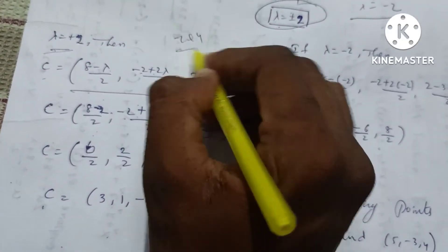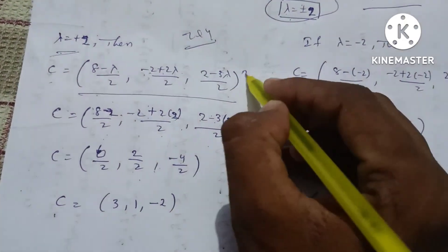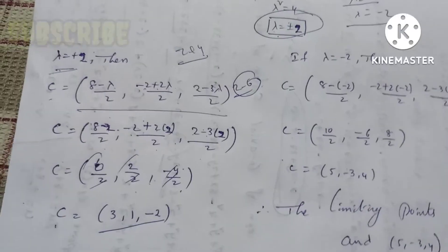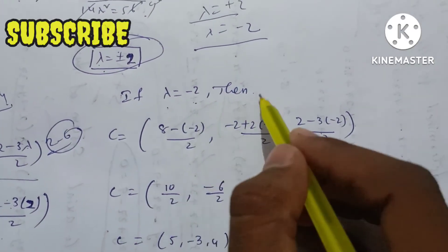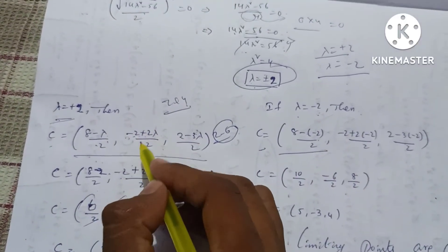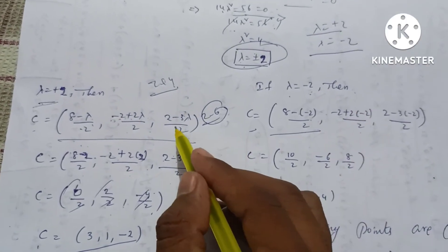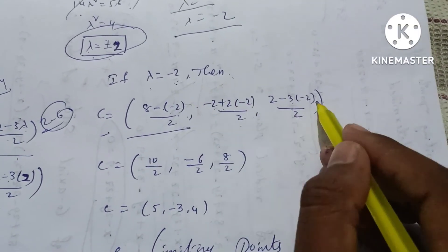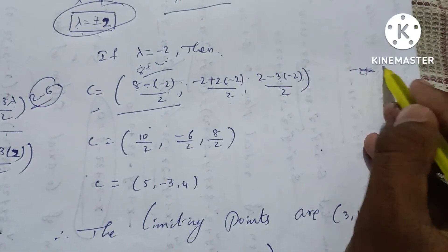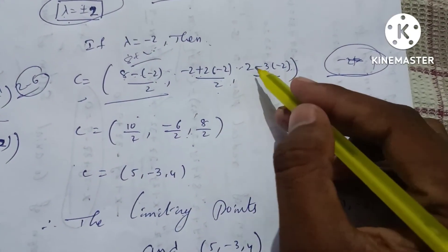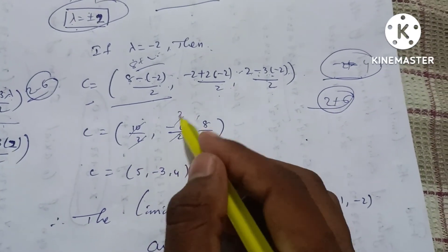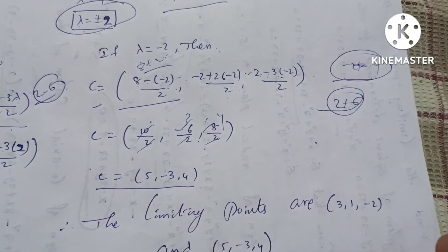For lambda = +2, the center is ((8 minus 2)/2, (2 minus 2·2)/2, (2 minus 3·2)/2) = (3, minus 1, minus 2) — wait, computing: (6/2, (2 minus 4)/2, (2 minus 6)/2) = (3, 1, minus 2). For lambda = minus 2, the center is ((8 plus 2)/2, (minus 2 minus 4)/2, (2 plus 6)/2) = (5, minus 3, 4). Therefore the two limiting points are (3, 1, minus 2) and (5, minus 3, 4).